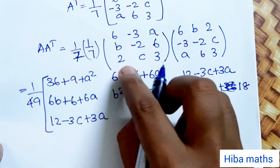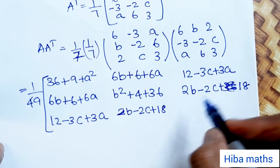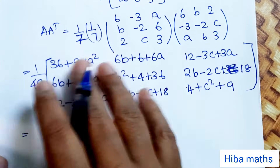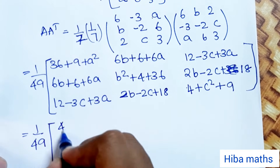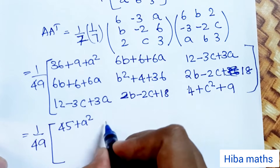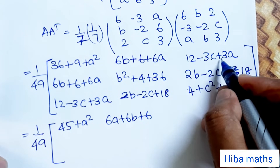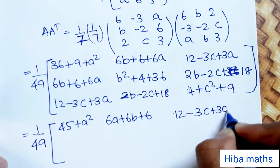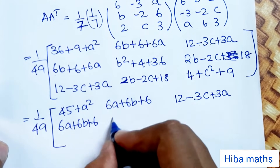Second row, third column: 2b minus 2c plus 18. Last row, first column: 12 minus 3c plus 3a. So computing all entries: 1 by 49 times [45 plus a squared, 6a plus 6b plus 6, 12 minus 3c plus 3a; ...; b squared plus 40, 2b minus 2c plus 18; ...].